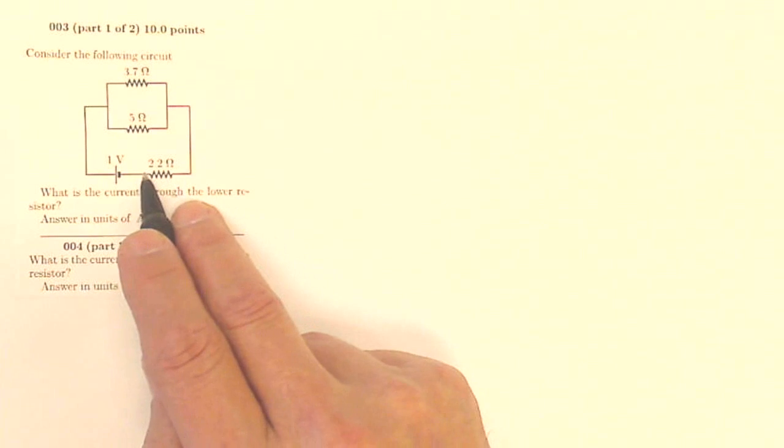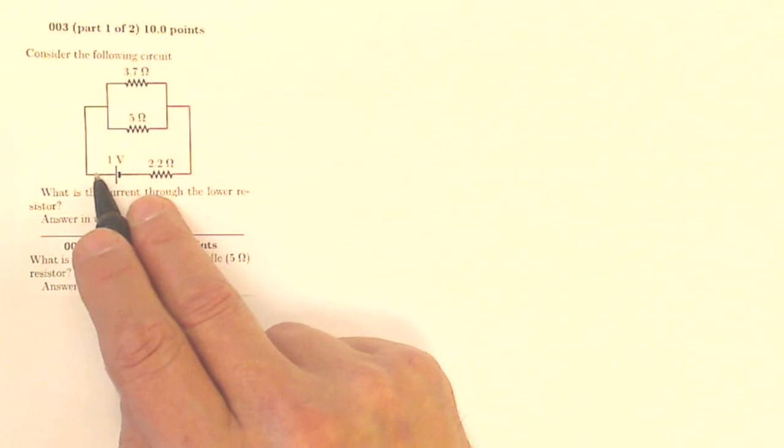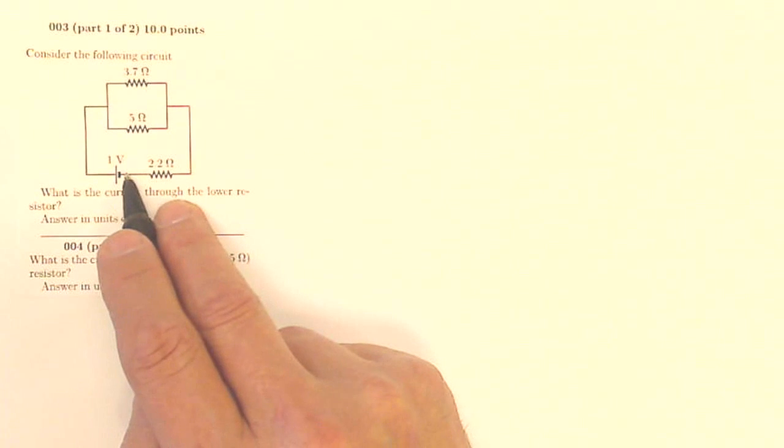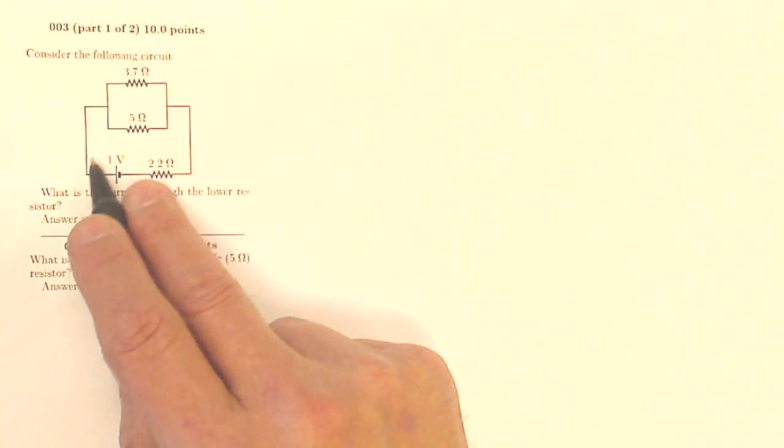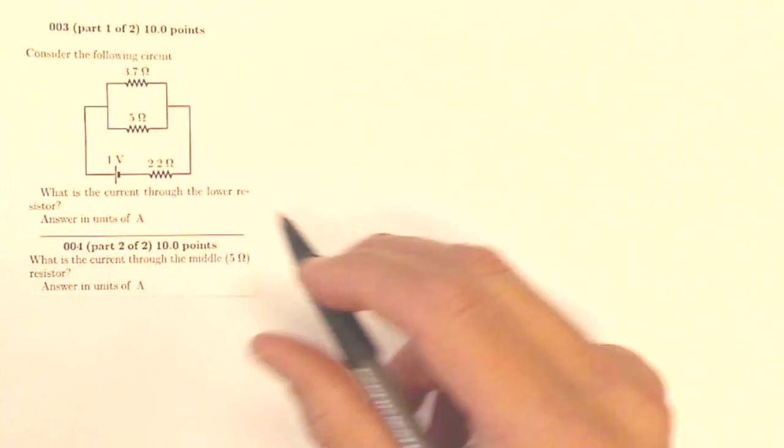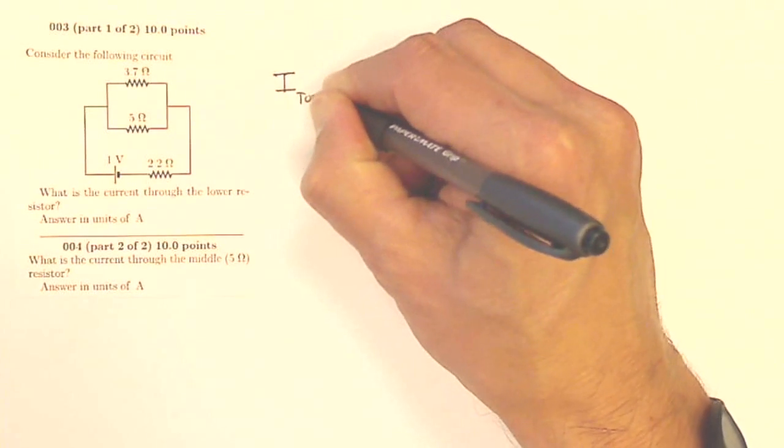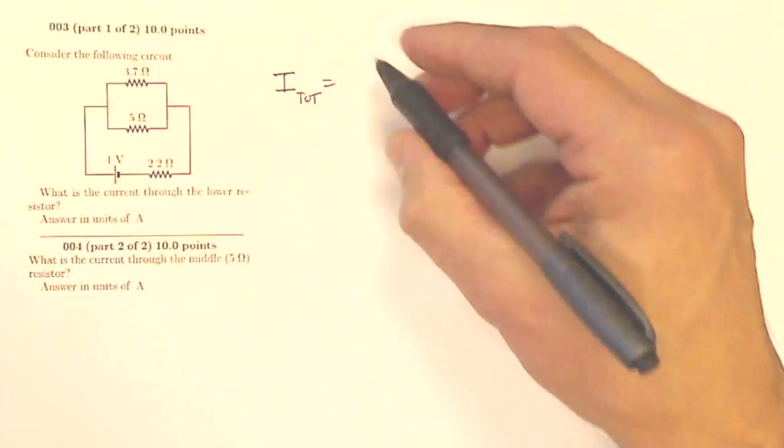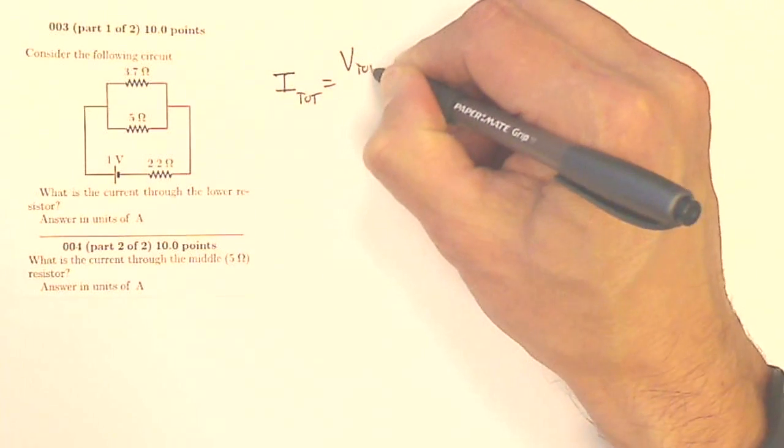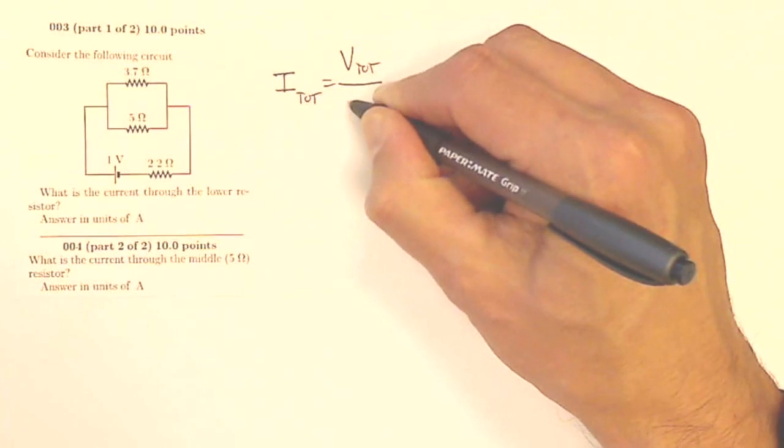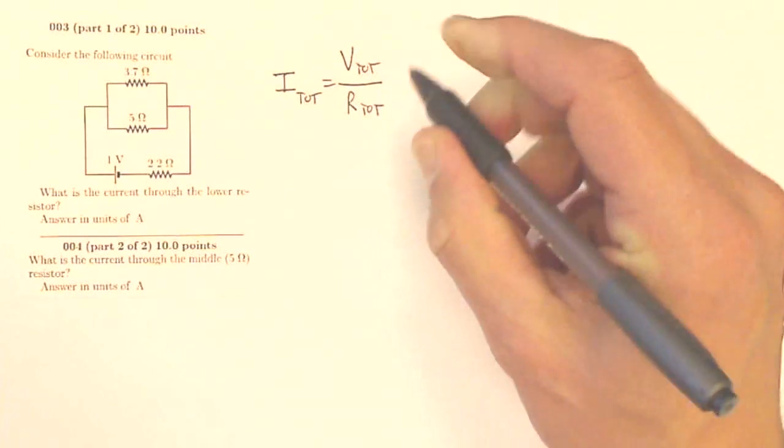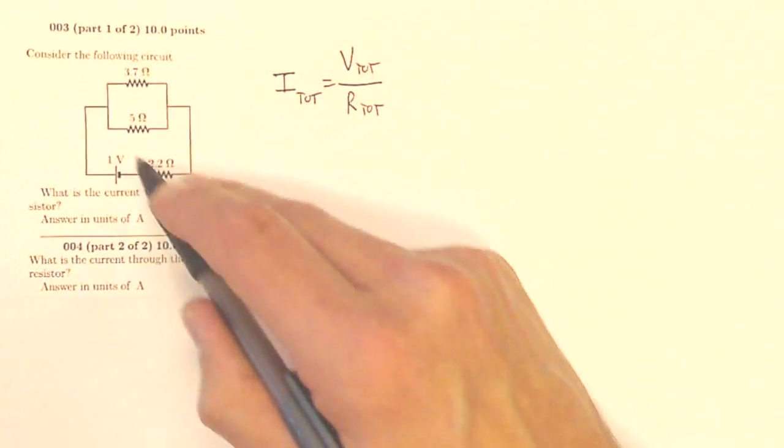Well, the current flowing through this resistor is going to be the same as the current leaving the battery. It's going to be the same as the current coming back to the battery. So I want the line current, I want the total current leaving the battery. And I know that the total current leaving the battery, I total, according to Ohm's law, it's going to be my V total, the voltage of the battery, divided by my resistance total.